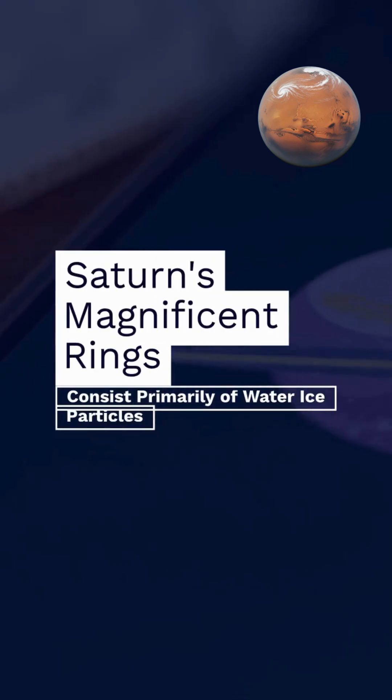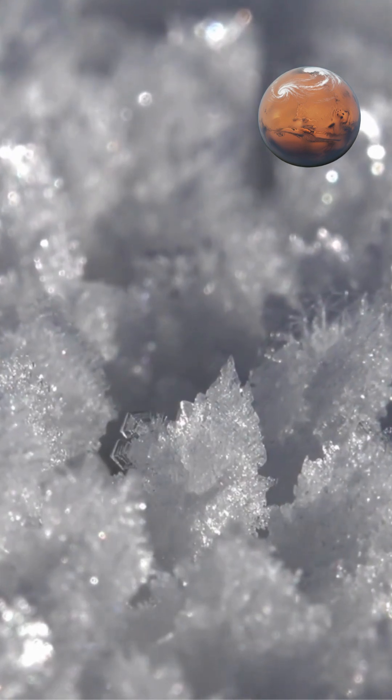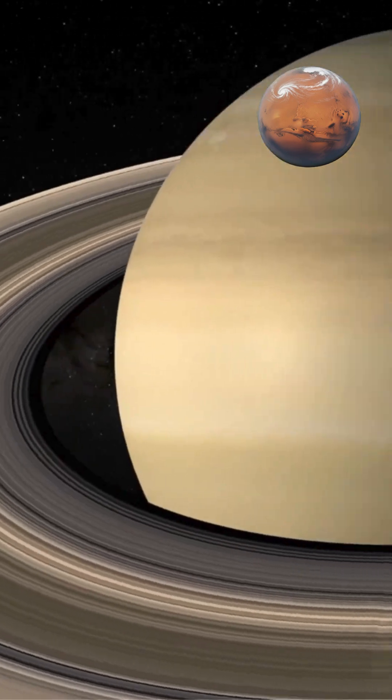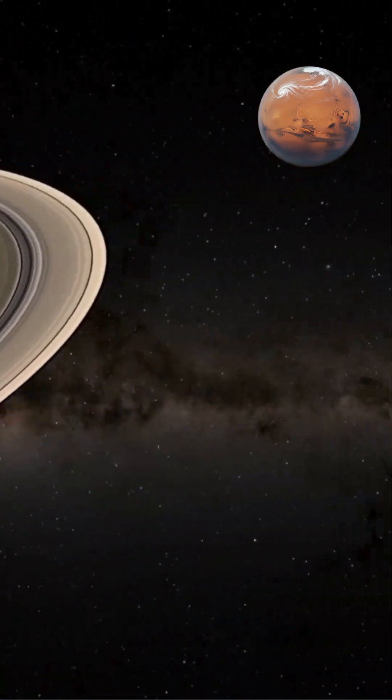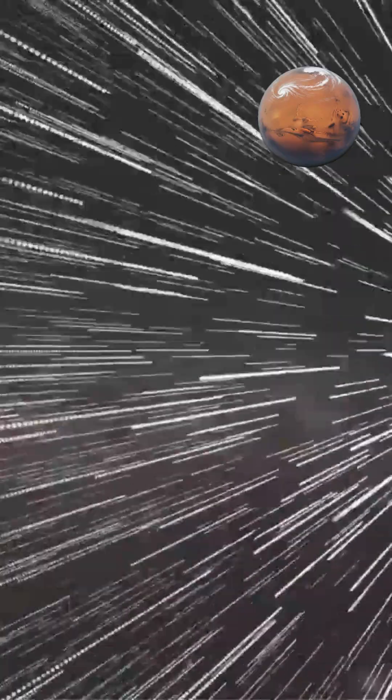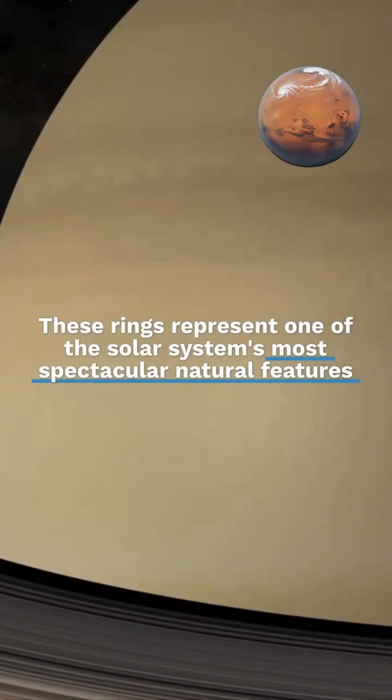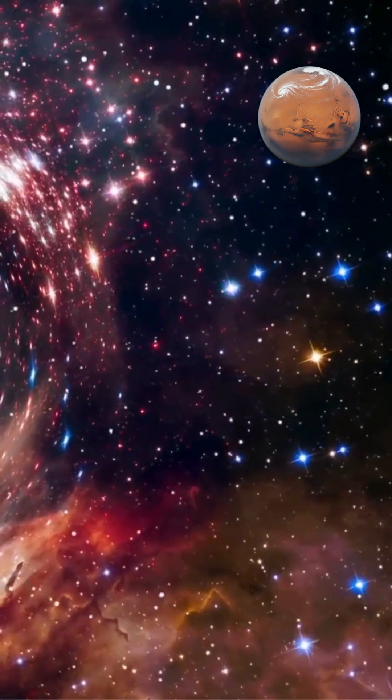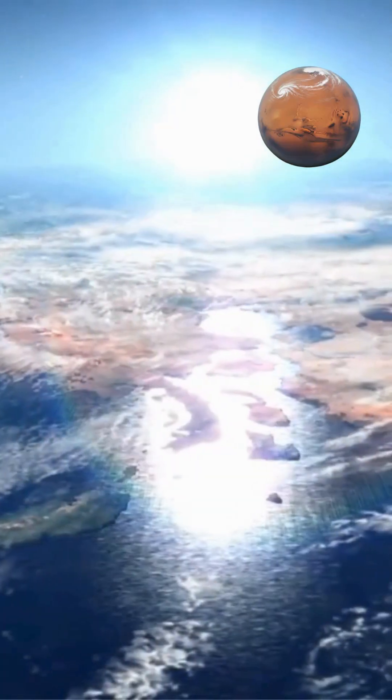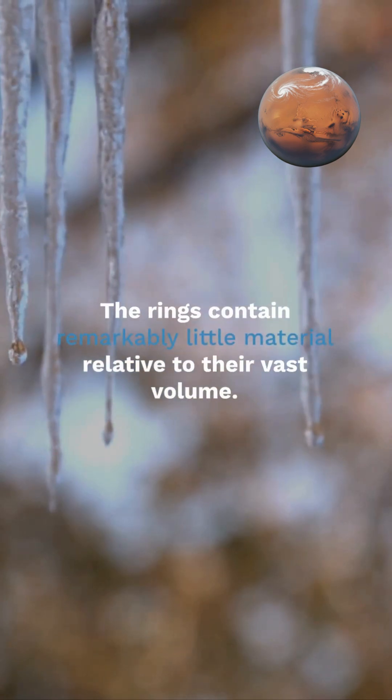Saturn's magnificent rings consist primarily of water-ice particles ranging from tiny dust grains to massive boulders, orbiting the planet in a thin disk structure spanning approximately 175,000 miles across. These rings represent one of the solar system's most spectacular natural features and reveal fascinating physics about orbital mechanics and planetary systems. The rings contain remarkably little material relative to their vast volume.